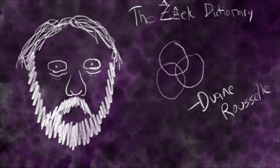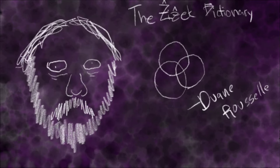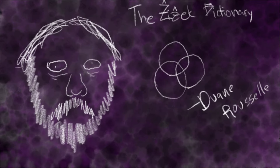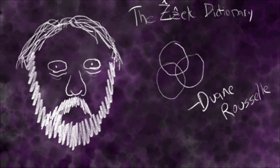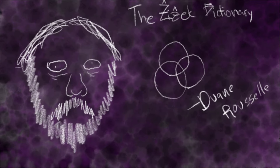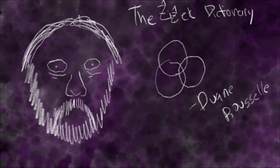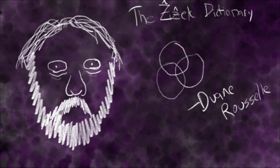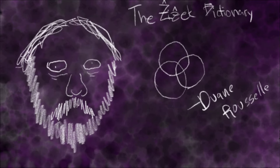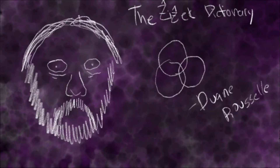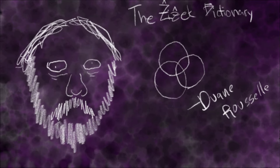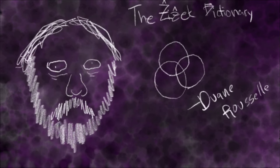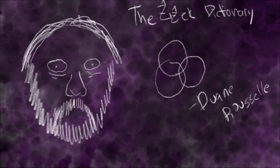Zizek's intervention involved the elucidation of the relationship within, and between, these three orders of being through carefully applied references to popular films, such as Alien, The Silence of the Lambs, and Vertigo.